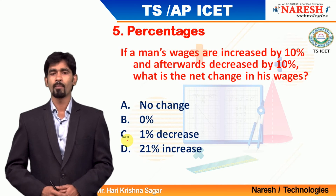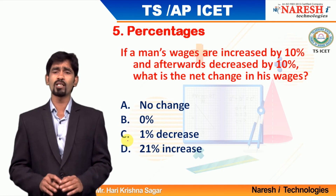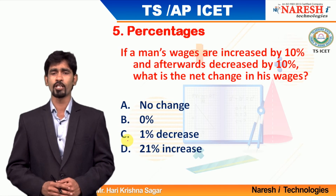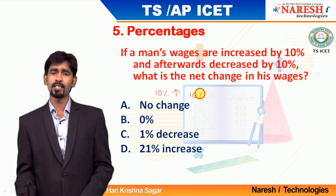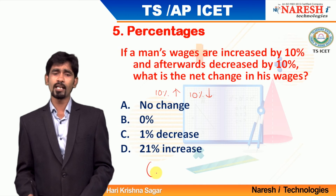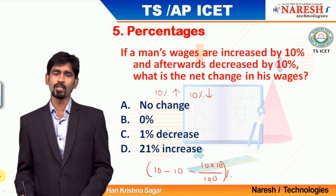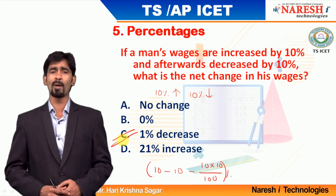Question number 5: if a man's wages is increased by 10 percentage and afterwards decreased by 10 percentage, what is the net change in wages? This is happening repeatedly — 10 percentage increase then 10 percentage decrease. The net change will be plus 10 minus 10 minus 10 into 10 divided by 100, giving a result of minus 1 percentage. Minus indicates a decrease, so the answer is 1 percentage decrease.